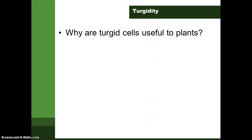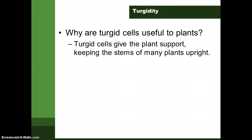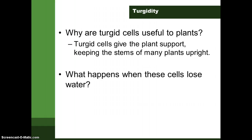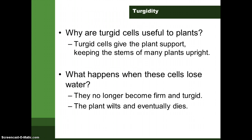Turgid cells are useful to plants because they provide support, keeping the stems of many plants upright to catch sunlight for photosynthesis. When cells lose water, they do not become firm and turgid, and the plant will wilt and then die.